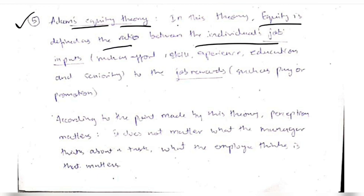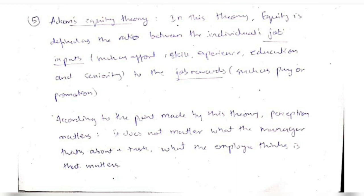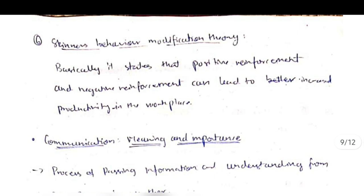The fifth theory is Adam's Equity Theory. He describes equity as the ratio between the work done and the reward received, and this ratio should be maintained to keep up good work. The key point is that what matters is not what the manager thinks, but what the employee perceives regarding their work.